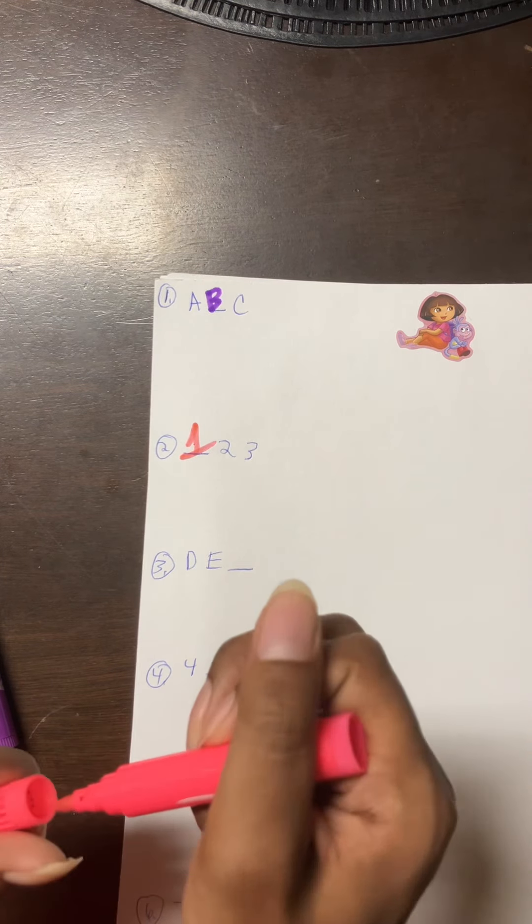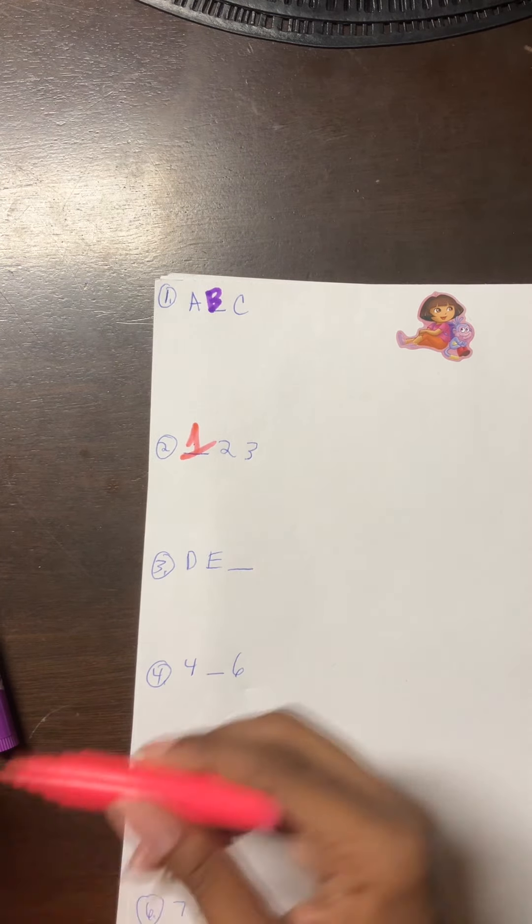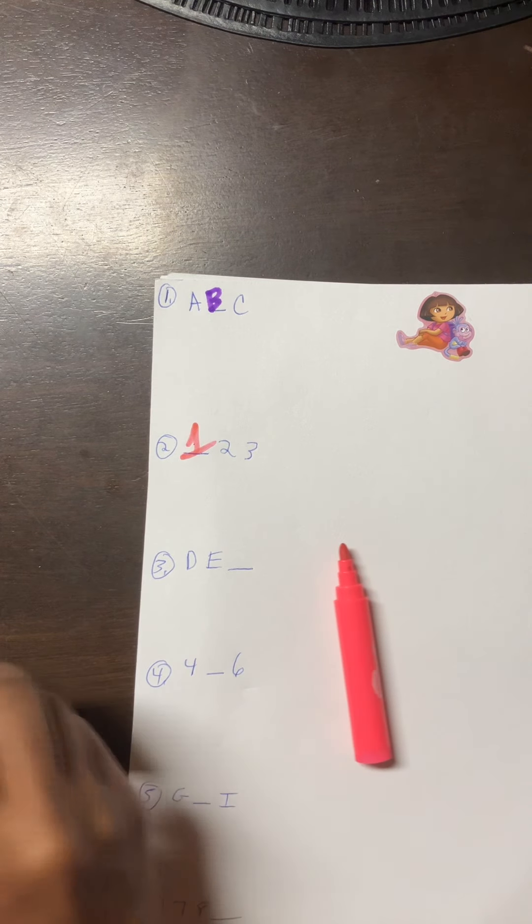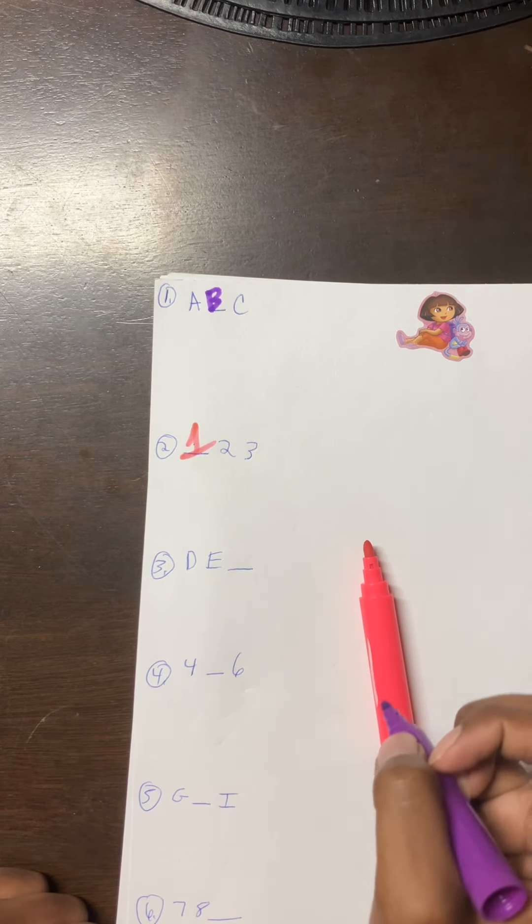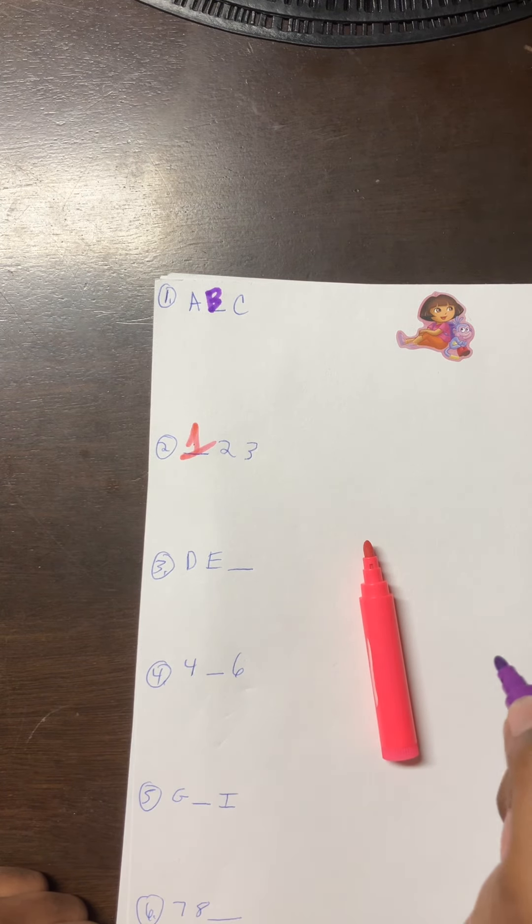Number three: DE blank. So it's A B C D E F. F.